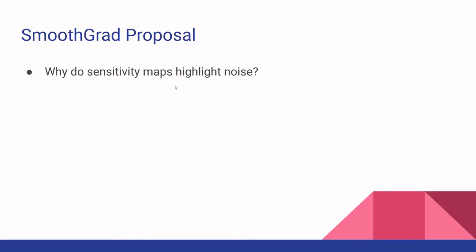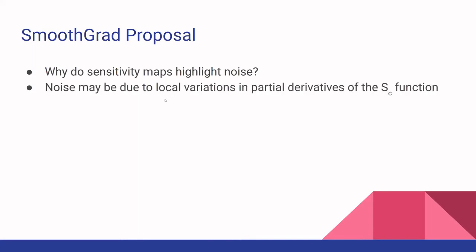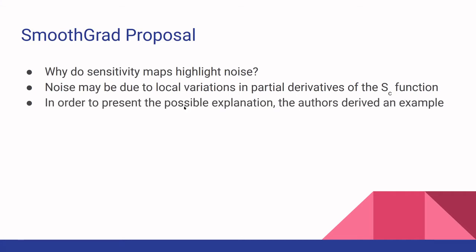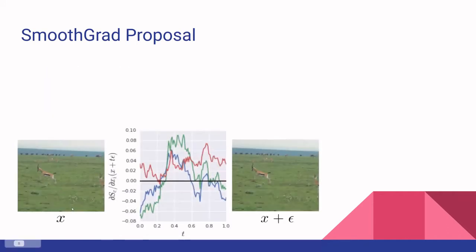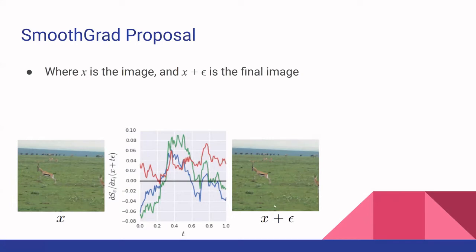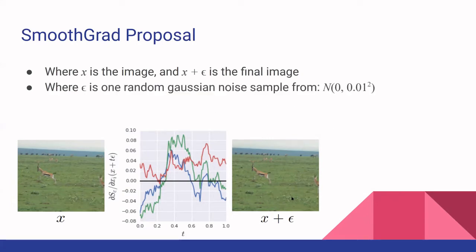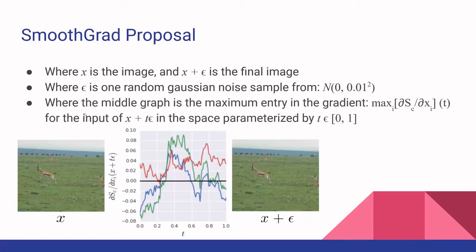What the authors first propose is why sensitivity maps are noisy. They propose it could be due to local variations in the partial derivative of the activation function. They present this with an explanation using an input image from ImageNet, and the final image where they add a random Gaussian sample with a mean of 0 and standard deviation of 0.01. To show the variation, they scale across a step range from 0 to 1 and take the max pixels from the gradient result.